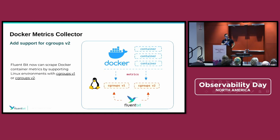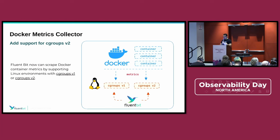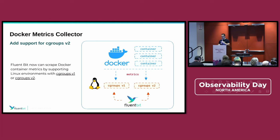FluentBit is also able to collect metrics from different places, including from Docker containers. Docker stores relevant information in the file system — the sys file system. The way metrics information is stored is by using the Cgroups v1 API or v2. In the past, as of a couple of months ago, we only supported v1 if you were using Docker. If you used Podman, we support both.